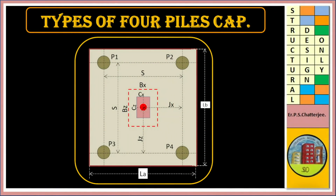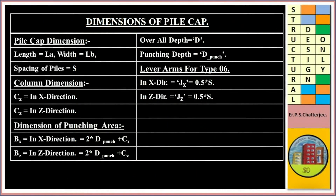This is our 4 Pile Cap. Dimensions of the Pile Cap: Length LA, Width LB, Spacing S, Column dimension Cx in X direction, Cz in Z direction. Dimension of punching area: Vx in X direction is equal to 2 times D-punch plus Cx. Vz in Z direction is equal to 2 times D-punch plus Cz. Overall depth D-punch.